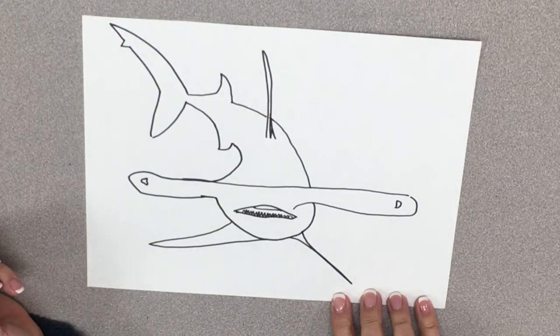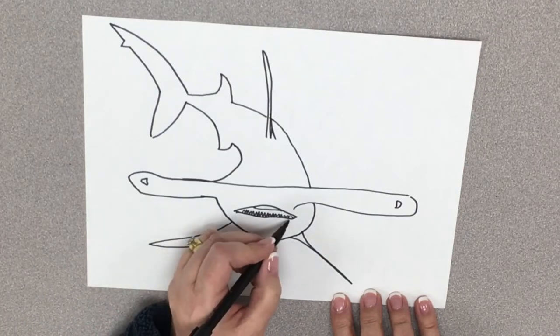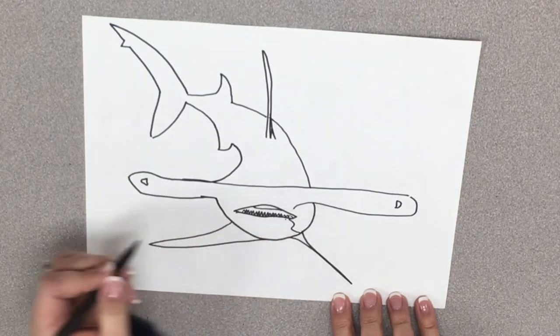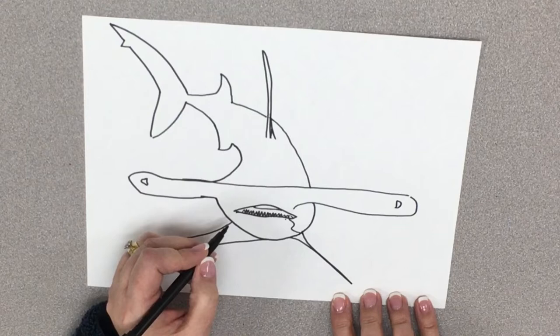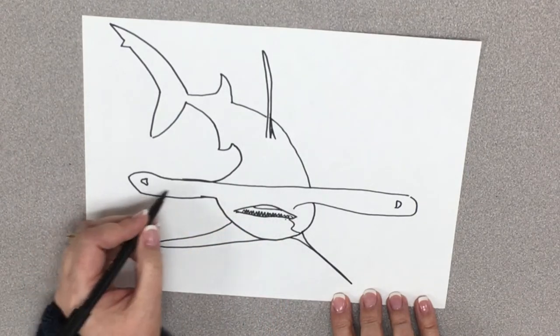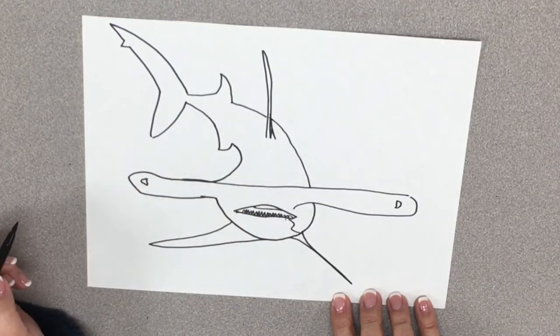So now we're going to do a little bit of detail. So his belly is kind of lighter. So I'm going to make this be darker through here. And then this is light right here and then it's really dark on the top. So I'll color that.